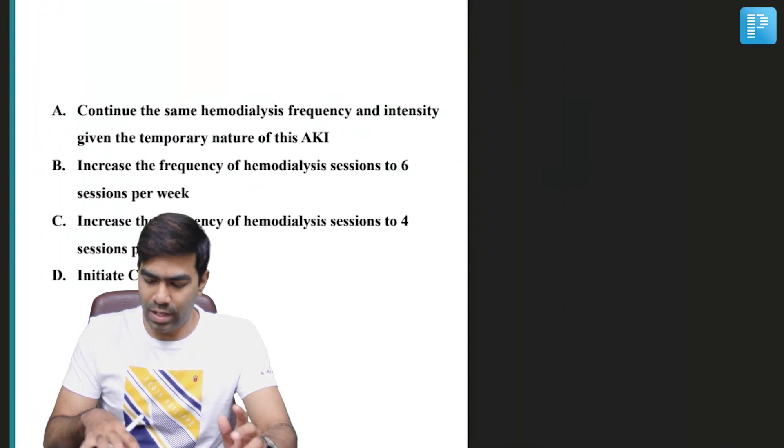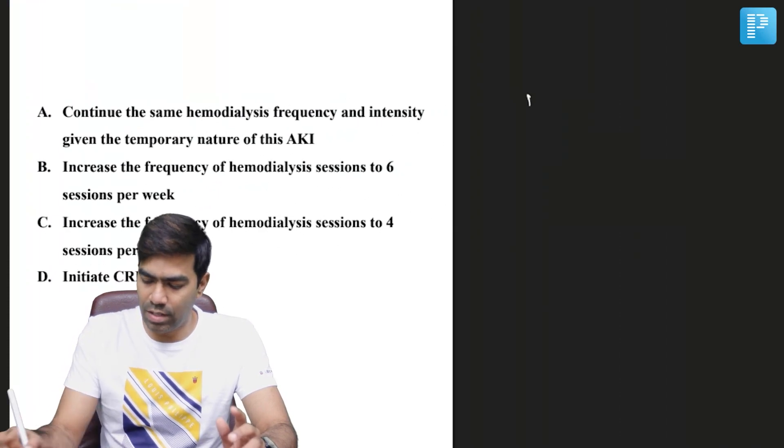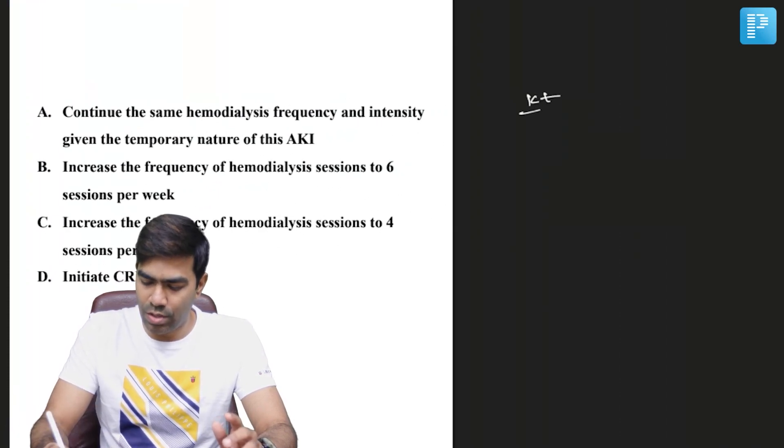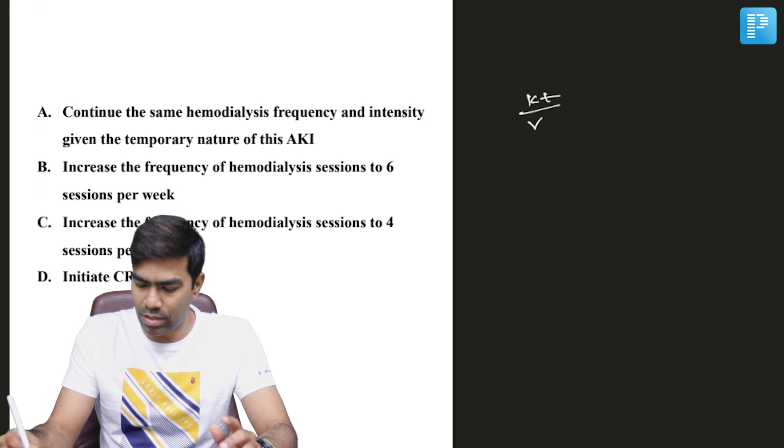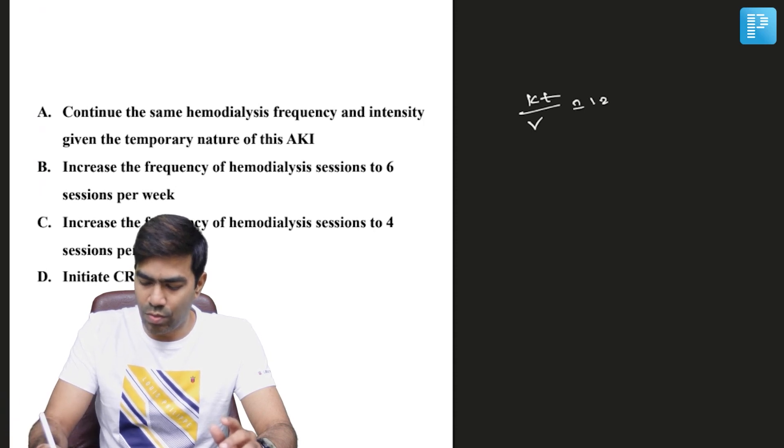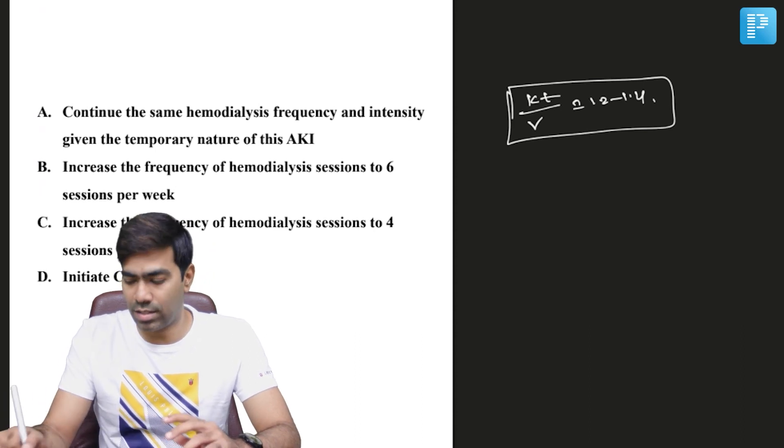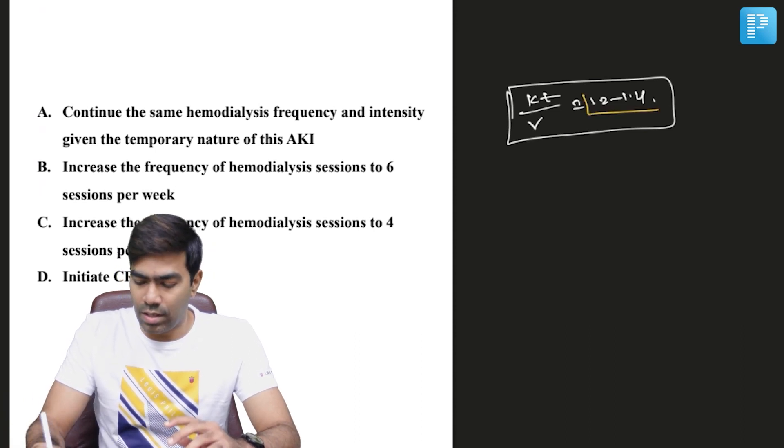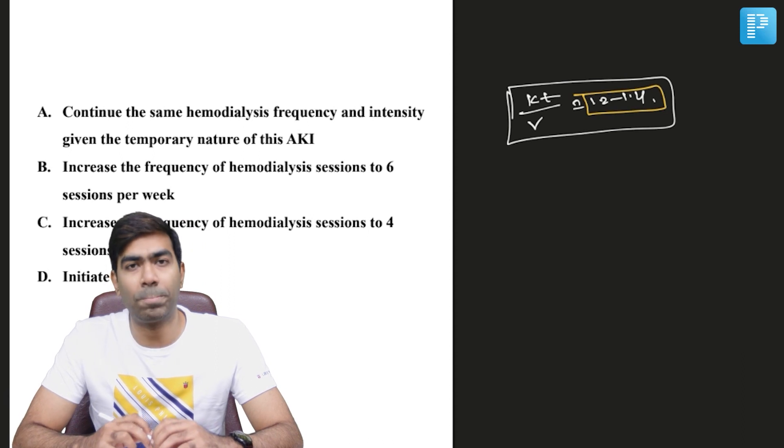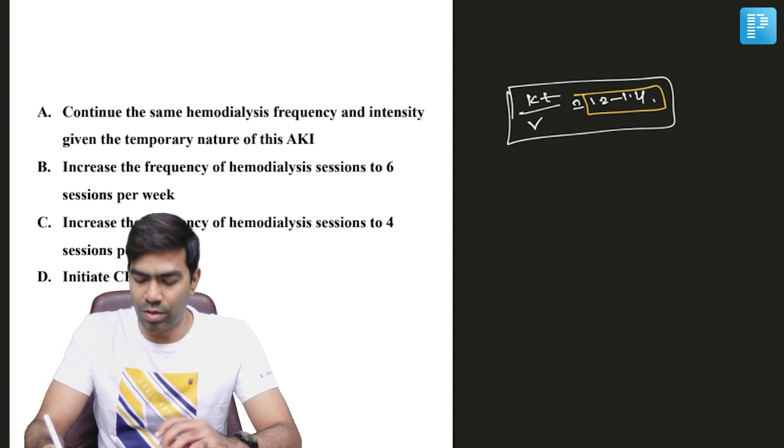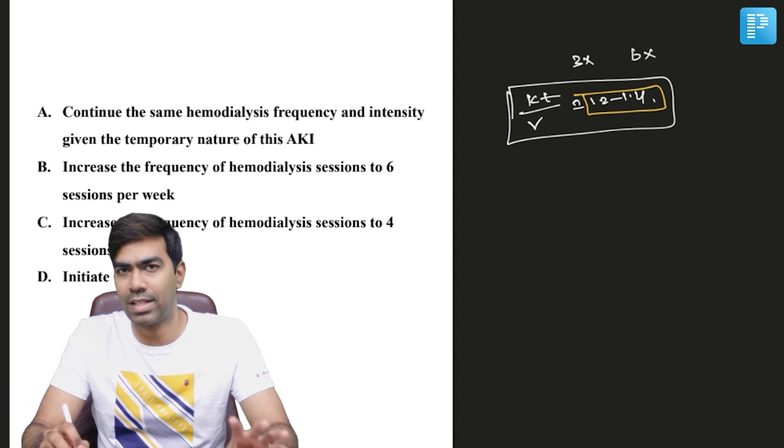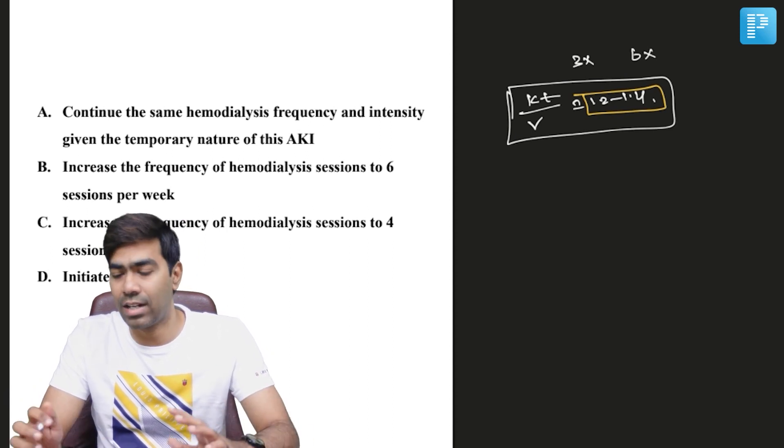Why? Because the KT/V ratio should be at least 1.2 to 1.4 according to many international consensus. If the KT/V ratio is in the range of 1.2 to 1.4, whether you dialyze three times per week or six times per week, especially in the setting of AKI as per the ATN trial, is not going to make much difference at all.